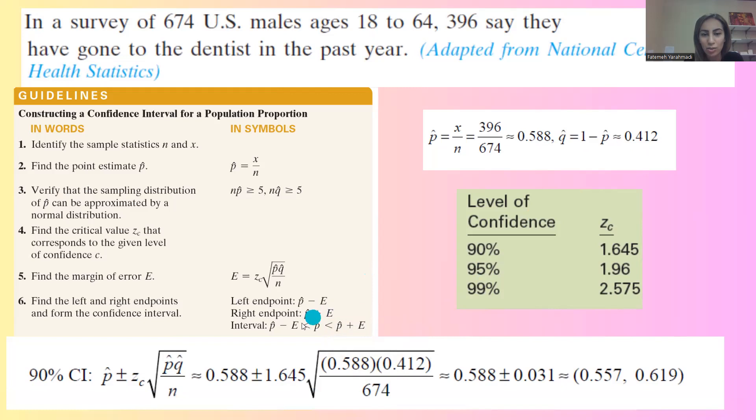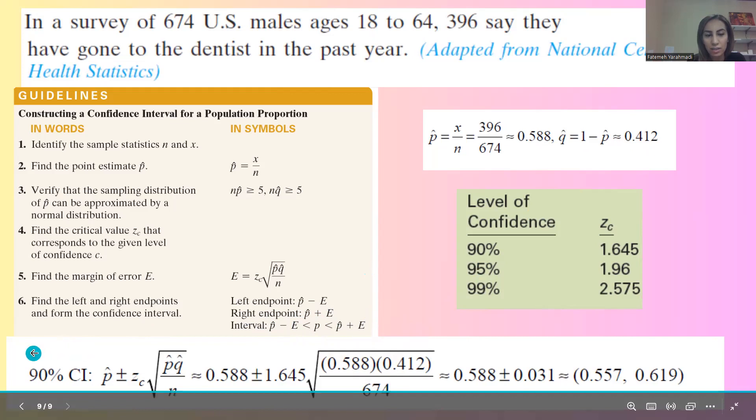Then you're going to say that my population proportion is bounded between p hat minus E and p hat plus E. So we are basically finding p hat plus minus E. 90% confidence interval is p hat plus minus the margin of error.